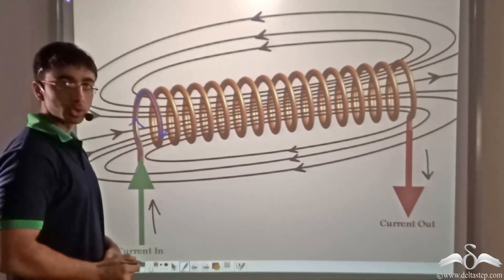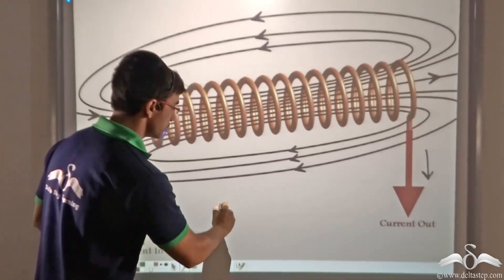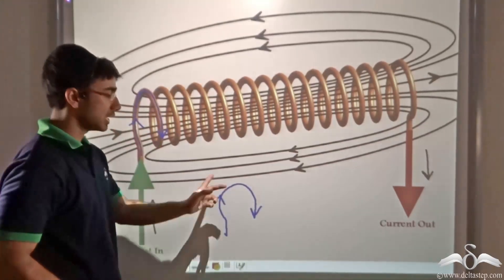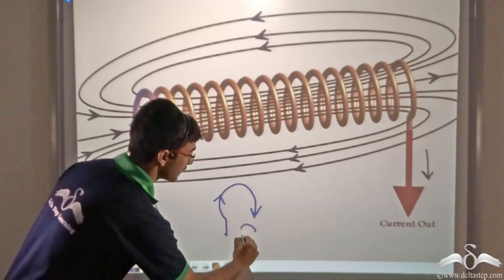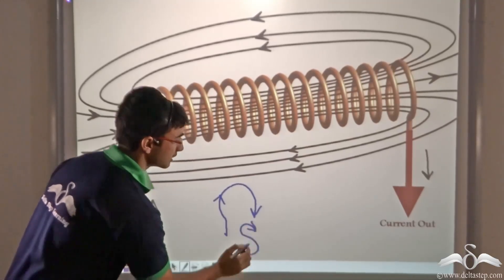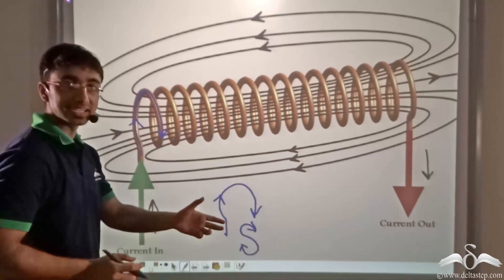Now what does this correspond to? If you look at it closely, then this resembles a clockwise rotation. Now if I resemble the clockwise rotation in this manner, I find that it is the letter S.